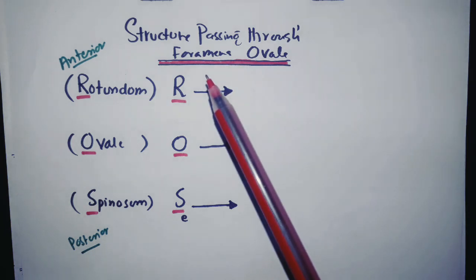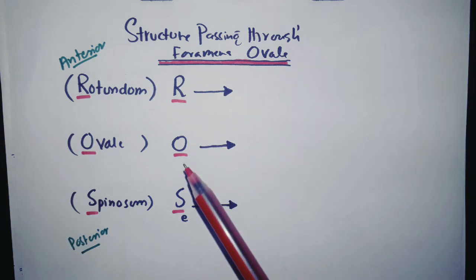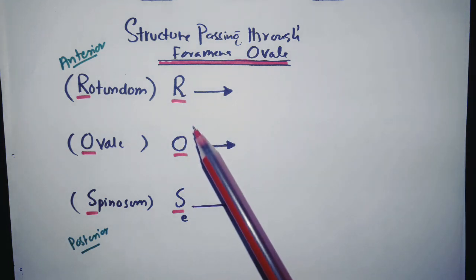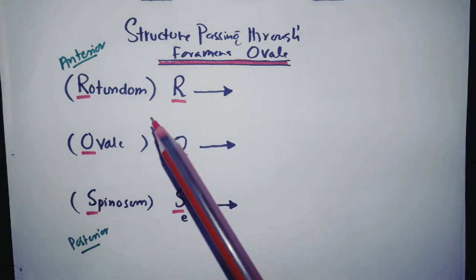Today I will be talking about structures passing through foramen ovale. The mnemonic here is ROS, or you can say ROSE, or reactive oxygen species, whatever you can say.